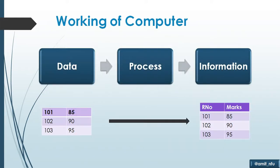In the working of a computer itself, it is all about data, process, and information. For example, numbers like 101, 85, 102, 90, 103, 95 — it is all data, raw facts. These numbers exist and they have certain meanings but it is not clear in this particular form.